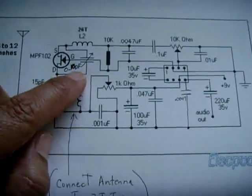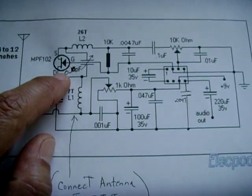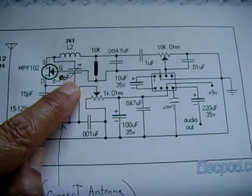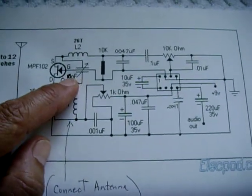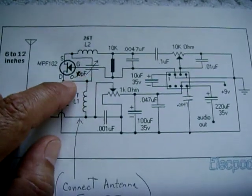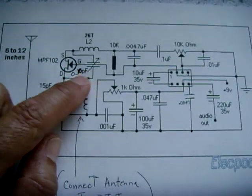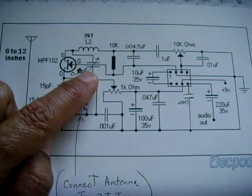Primarily, this capacitor right here between the source and the drain on the MPF 102. It was a 5 PF. I wasn't getting good sound quality until I replaced that with a trimmer. So use a 0 to 10 PF trimmer here.